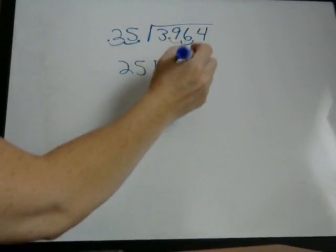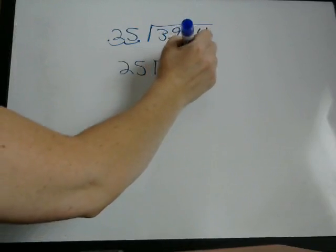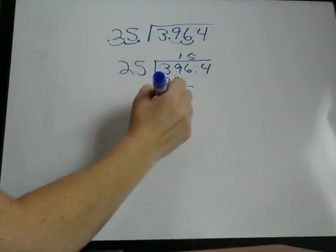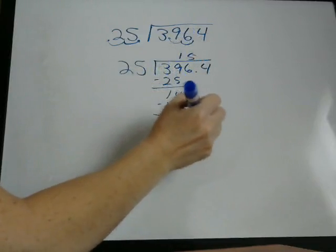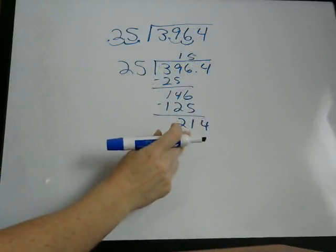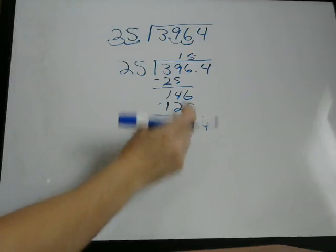Subtract. We get 146. 25 into 146 goes five times. 125. Bring the 4 down.